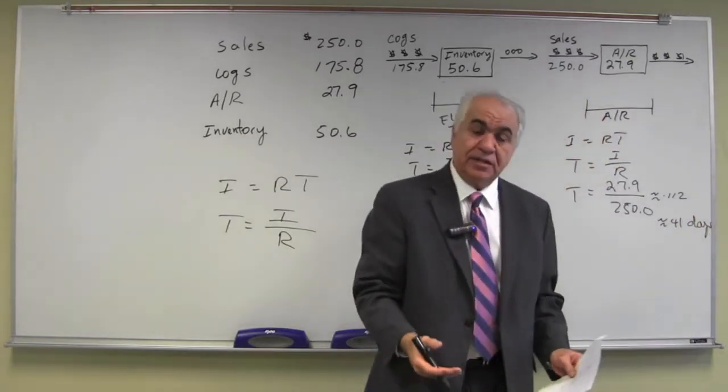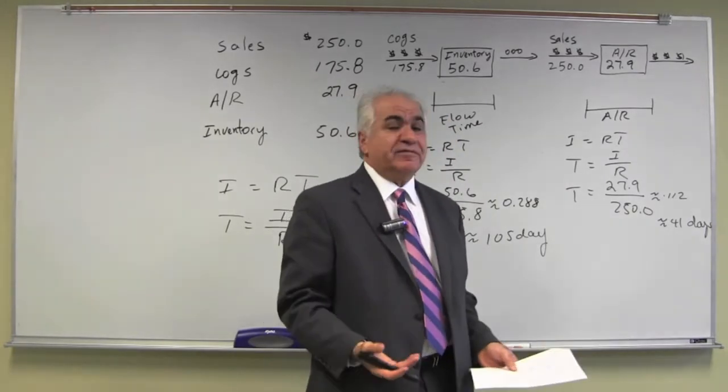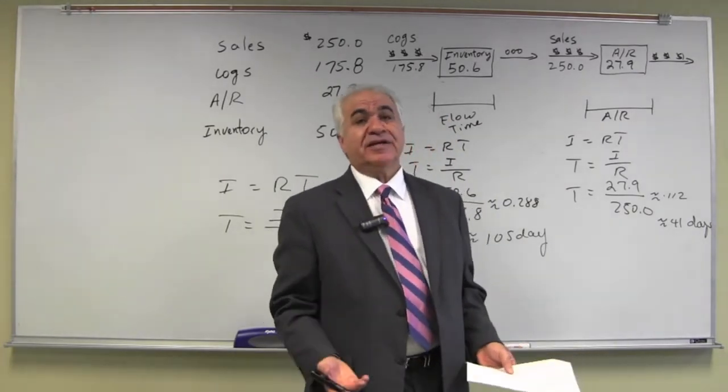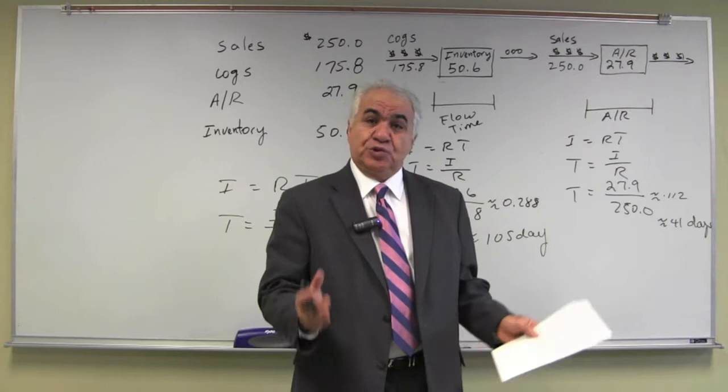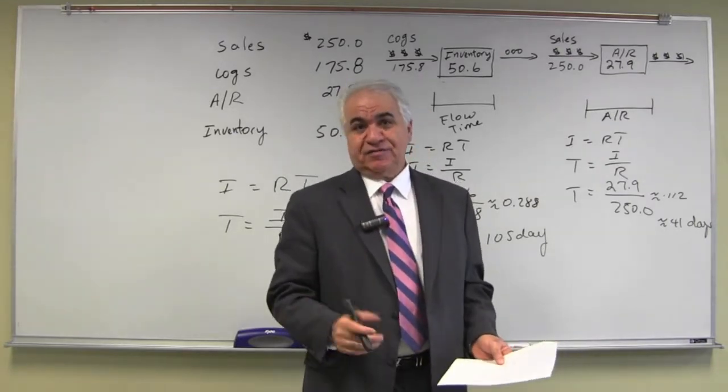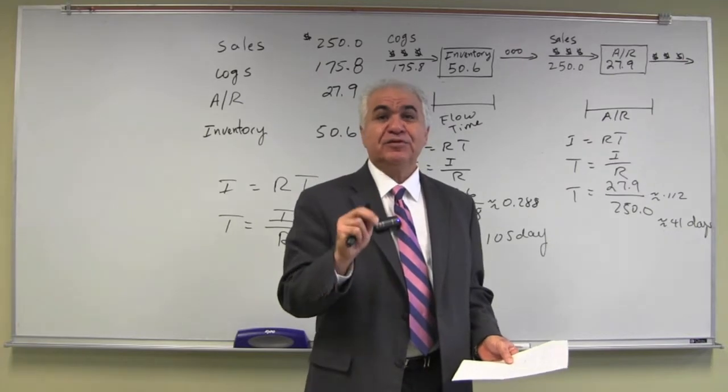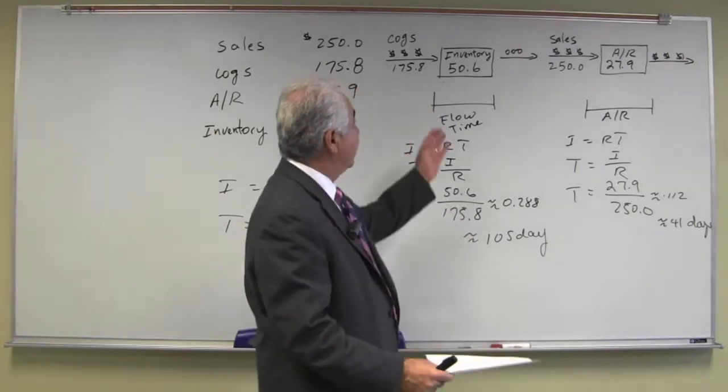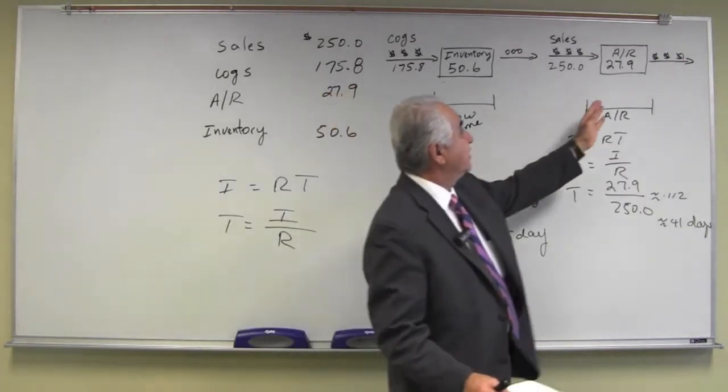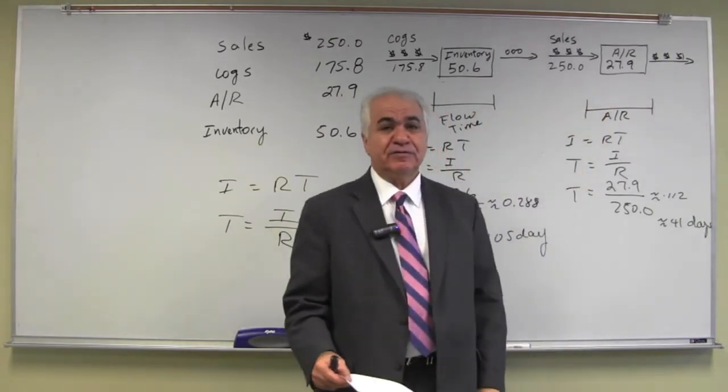So what does that mean? That means, on average, it takes 41 days to collect on our account receivable. Shorter that time is, better our cash flow. So we have two very important numbers, two very important flow times. We have the factory flow time and we have the account receivable flow time.